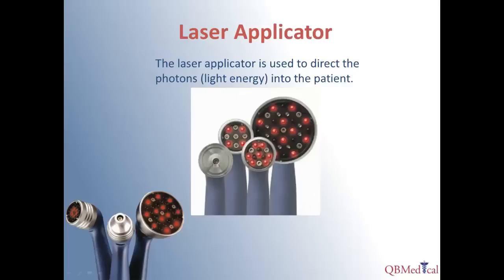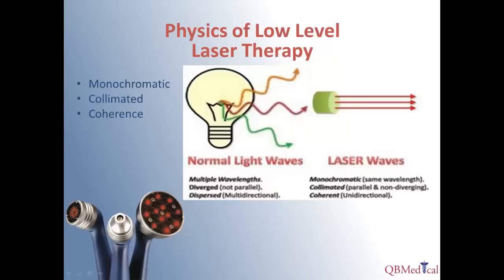In therapeutic lasers, a laser applicator is used to direct the laser beam or beams to the targeted treatment area. The output of a laser differs from that of any other light source in three characteristics: the first is monochromatic, meaning the light emitted is of a single wavelength and the same color; the second is collimated, meaning the light is unidirectional as compared to being scattered; and the third is coherence, meaning that every wave emitted is in phase together.